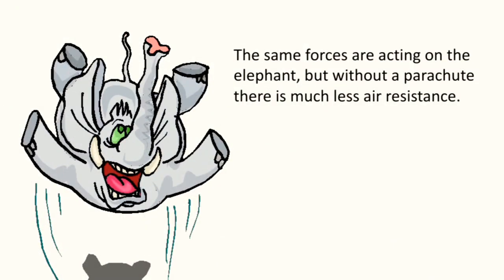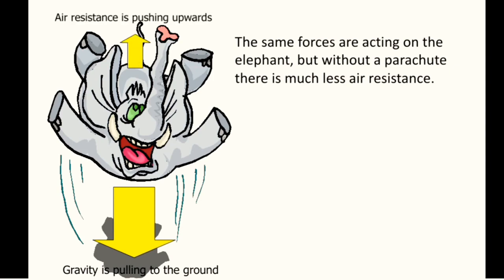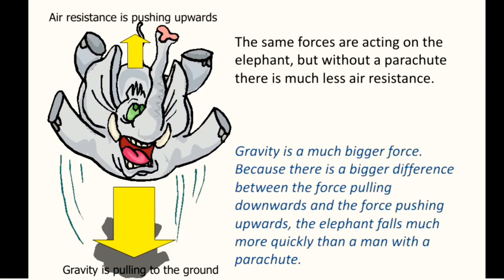The same forces are acting on the elephant, but without a parachute, there is much less air resistance. Gravity is pulling to the ground, while air resistance is pushing the elephant upwards. Gravity is a much bigger force because there is a bigger difference between the force pulling downwards and the force pushing upwards. The elephant falls much more quickly than a man with a parachute.